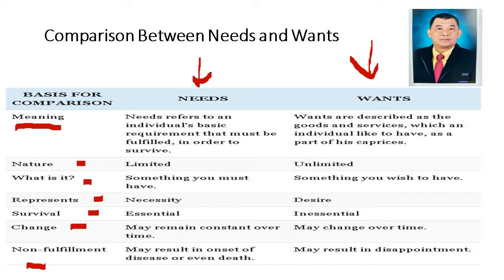In terms of definition, the key word for needs is basic requirements in order for a person to survive. Non-fulfillment of these needs might result in ailment, diseases, and even death. While wants are only a disposition — an abrupt disposition. Sometimes, in a click of a finger, you just decide to purchase a product but you don't need it; you just want it. It is not essential for survival.